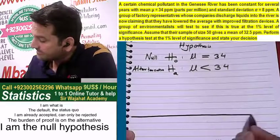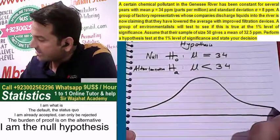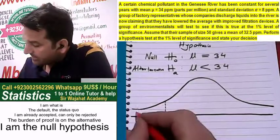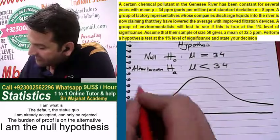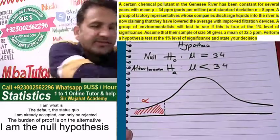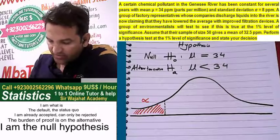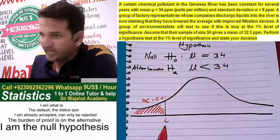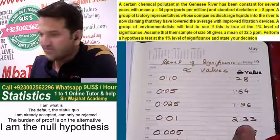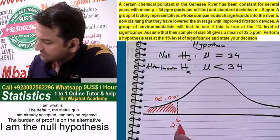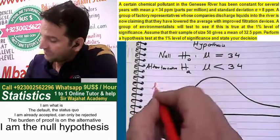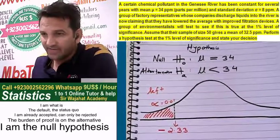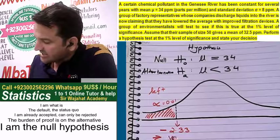Let me develop the figure at the 1% level of significance. Alpha is 1%, which means alpha = 0.01. We draw the distribution and mark the rejection region on the left side. The critical value for 0.01 is 2.33, and since it is a left-side test, we take it as negative: Z critical = -2.33.